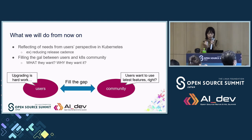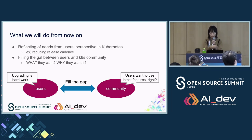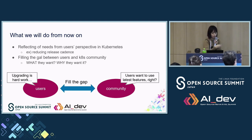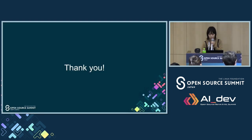Finally, what we will do from now on: we will reflect the needs from our customers' perspective in Kubernetes — for example, reducing release cadence is our customers' wish. Sometimes communities don't know or understand what users want. Even with surveys, it's impossible to understand perfectly. In order to understand each other, we need to talk and know users deeply. We need to act as a spokesperson for companies. As a result, we will fill the gap between users and the community. This is all for my presentation. Thank you for listening.